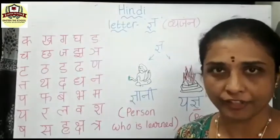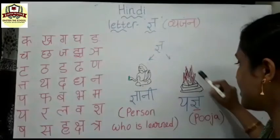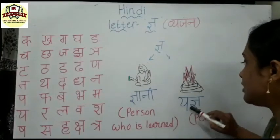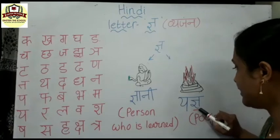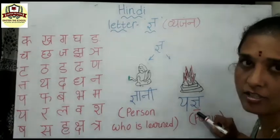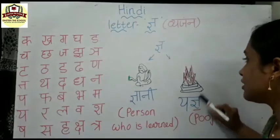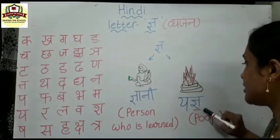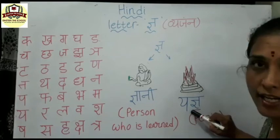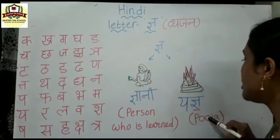Gnaani means the person who knows everything. And here, Gna say Yagna. In this word Yagna, we will see the letter Gna at the end, children. Gna can be written at the end, as in the word Yagna.